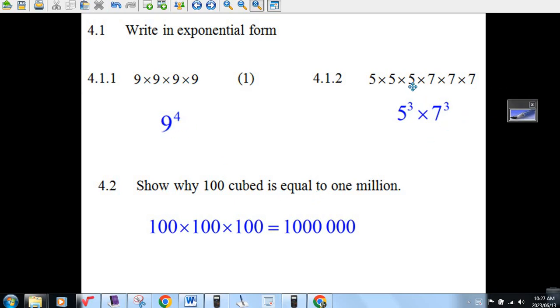The next question, there's three 5's multiplied together, so you go 5 cubed times three 7, 7 cubed. That's your answer.